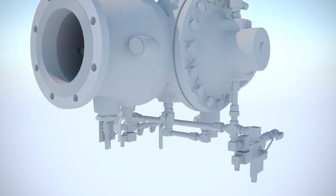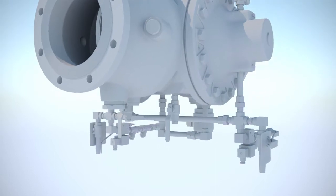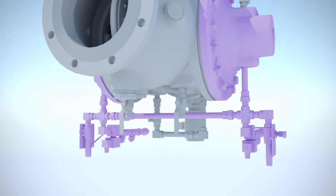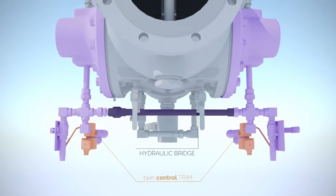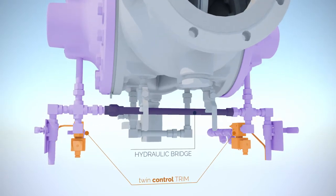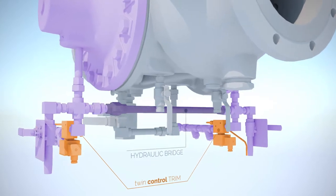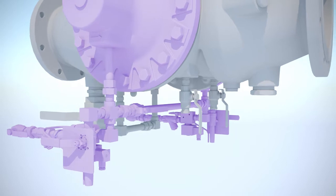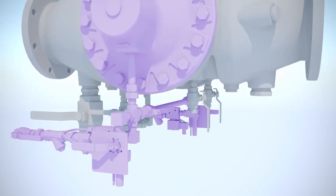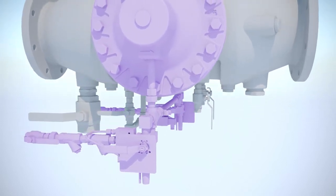Following on from the redundancy principle applied to the two control chambers, the VDD is also equipped with a twin control trim which actuates each of the two chambers. The two trims are linked by means of a hydraulic bridge which propagates any activation trim to either of the two chambers to form a deluge system with an integrated bypass line.